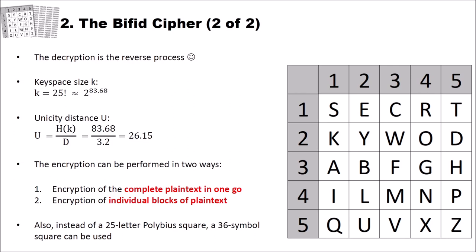Also, instead of a 25-letter Polybius square, you could use a 36-symbol square, and this would allow you also to encrypt the letter J and, additionally, for instance, the digits from 0 to 9.